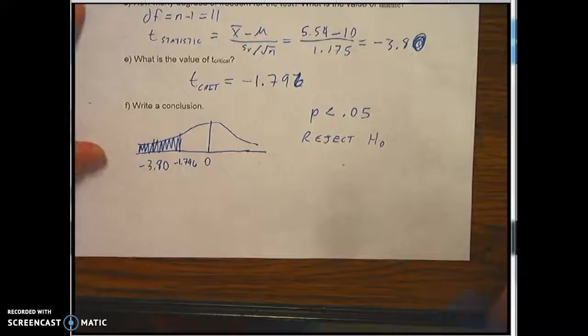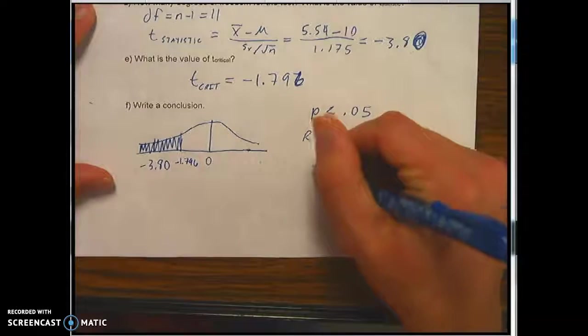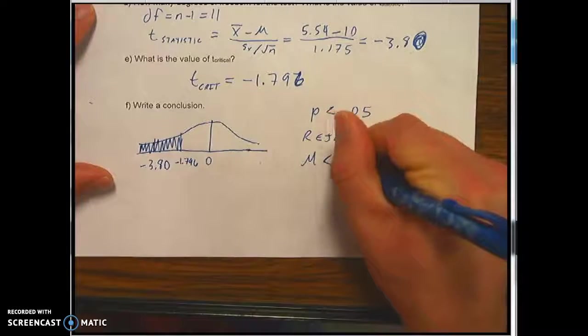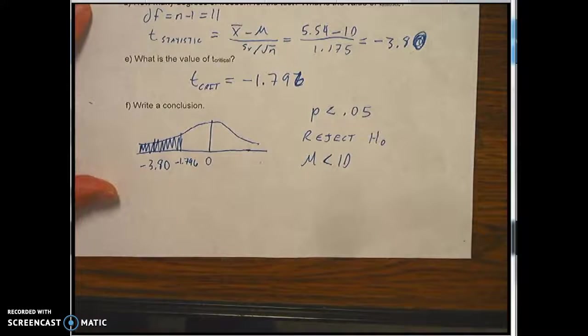So therefore, we can say that mu is definitely less than 10. That's for the population. Which means Stony Point students live less than 10 miles from campus on average. There's one caveat here.